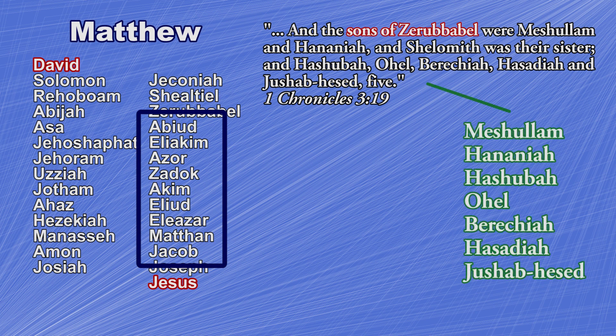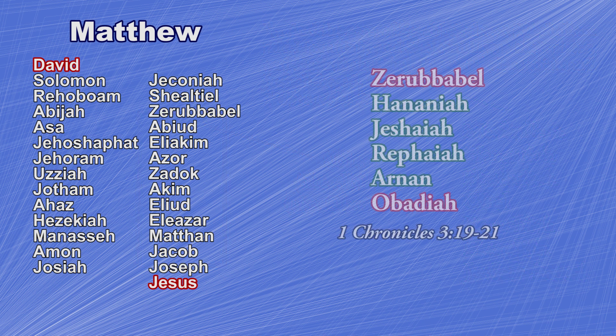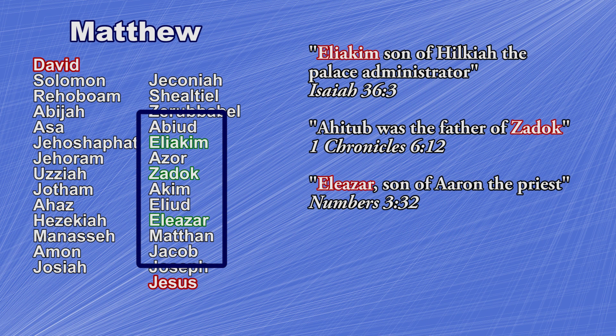We have another problem. What about the names listed after Zerubbabel? In 1 Chronicles, we see that Zerubbabel has a number of sons, yet none of them are named Abiud. Due to translation issues, Abiud may also be known as Obadiah. There is an Obadiah listed in Zerubbabel's family, but it's his great-great-great-grandson. So at best, Matthew omits more names. As for the rest of these names, a couple of them can be found here and there in the Old Testament, but they do not appear to be related to the people listed in Matthew.